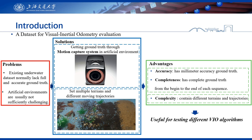Our dataset has the following advantages. First, the accuracy of the ground truth can reach a military level. Second, the proposed dataset has ground truth trajectories from the beginning to the end of each sequence. Thirdly, the dataset contains data collected in different terrains and motion trajectories.